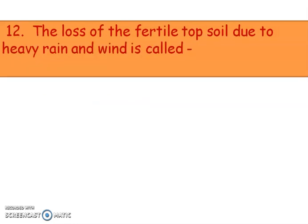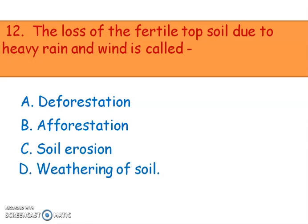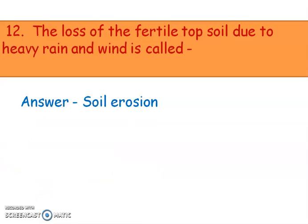Next question: the loss of the fertile topsoil due to heavy rain and wind is called — options are deforestation, afforestation, soil erosion, and weathering of soil. The right answer is soil erosion. Deforestation is the cutting of trees. Afforestation is the establishment of a forest by planting more trees. Weathering is the breakdown of rocks. Soil erosion is the loss of fertile topsoil due to heavy rain and wind.